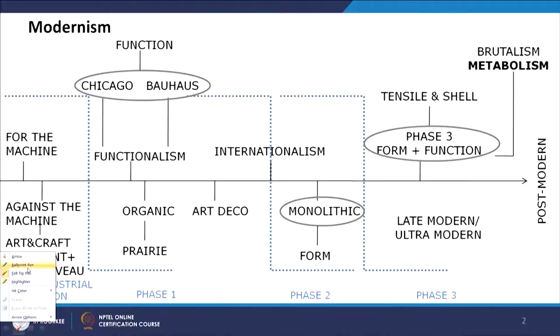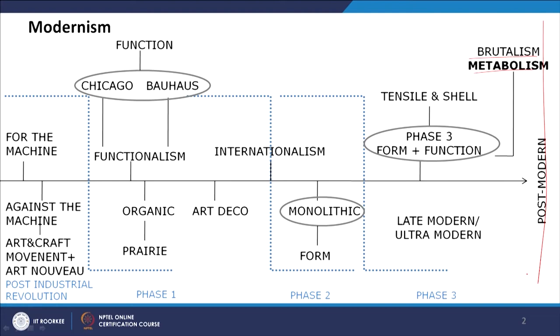If you look at the timeline, brutalism and metabolism are at the end of modernism, and after that post-modernism started. Brutalism and metabolism sit in between modernism and post-modernism. Many features from these movements, such as shell structures used by designers like Calatrava, also appeared in post-modern buildings. The brutalism and metabolism styles were used in several post-modern movements as well.